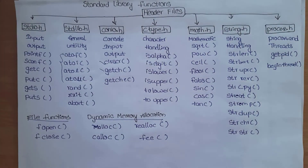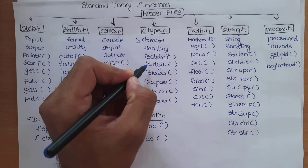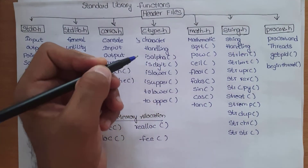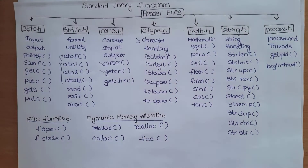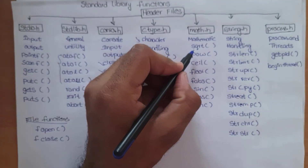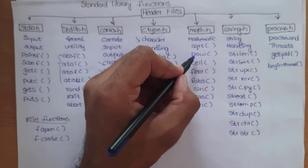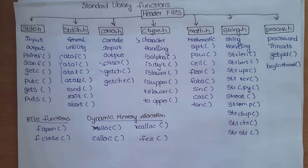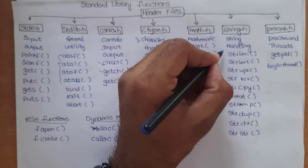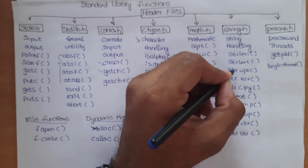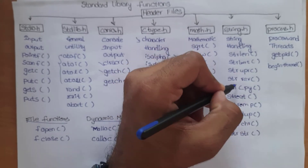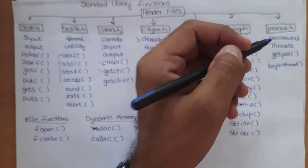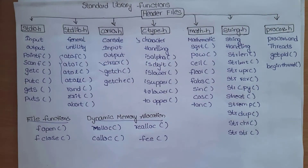ctype.h contains functions such as isalpha, isdigit, islower, isupper, tolower, and toupper. math.h contains mathematical functions such as sqrt (square root) and pow (power). string.h contains string handling functions such as strlen (string length), strlwr (string lower), strupr (string upper), strrev (string reverse), and strcpy (string copy). process.h contains process and thread functions.